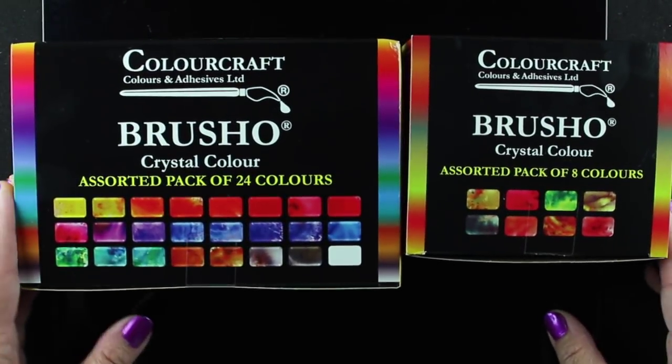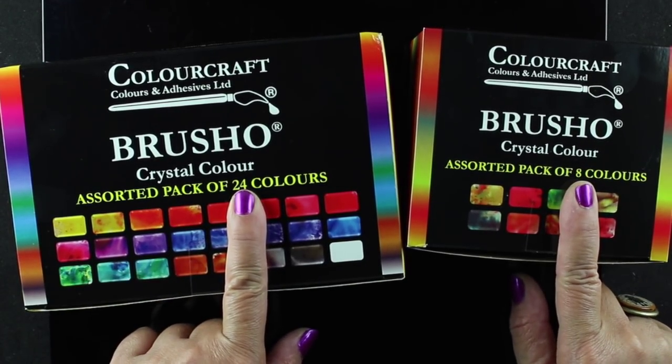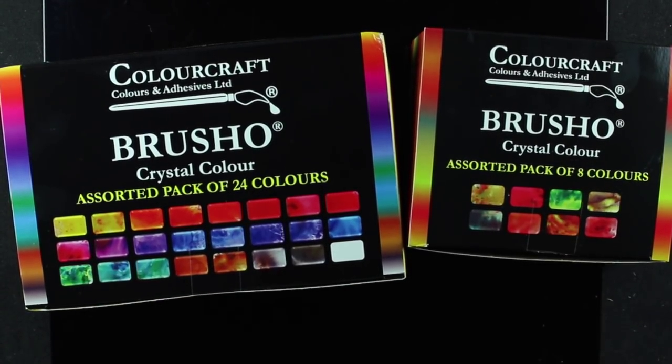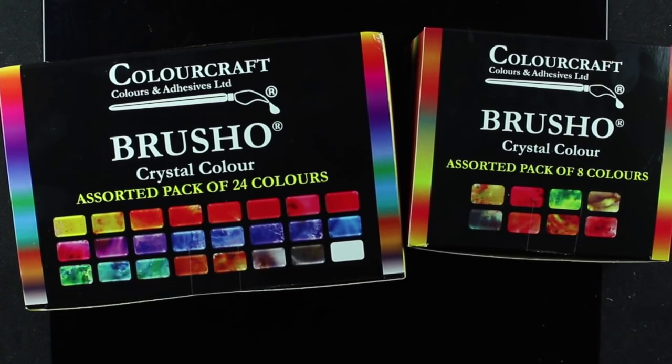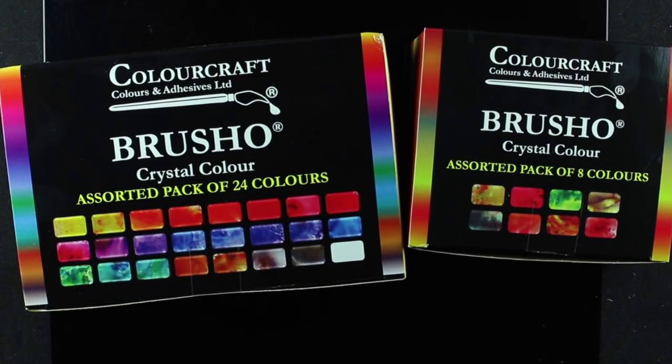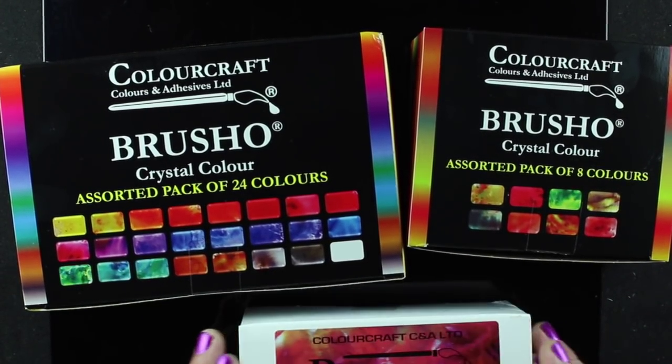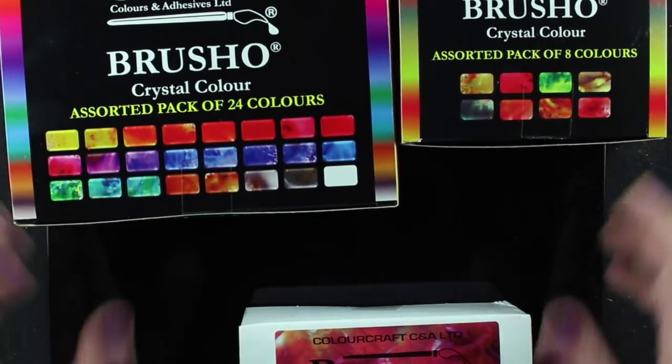This video is primarily focused on Brusho since it needs the most work to get the bottles ready to use. So I have the 24 and the 8 here. This is, I believe, the US packaging. There are also other types of packaging you can get, and I ordered a set of 12 that came in a different box, but it's the same product.